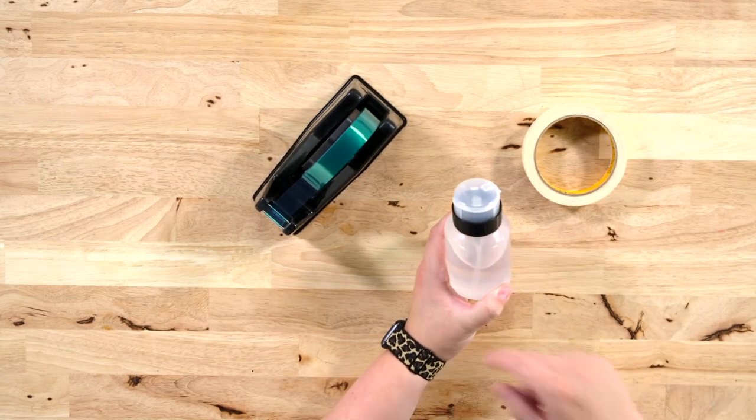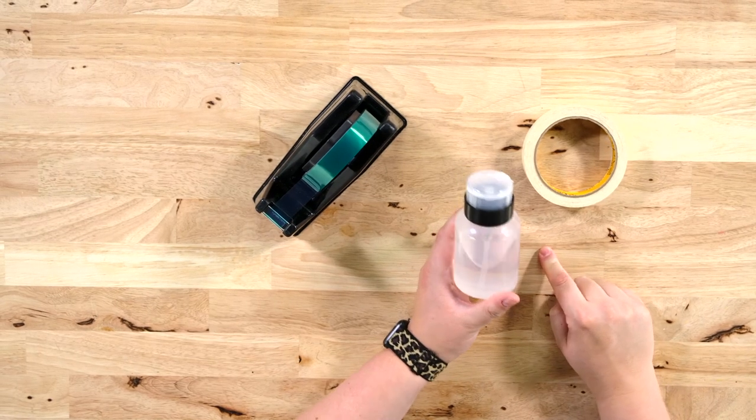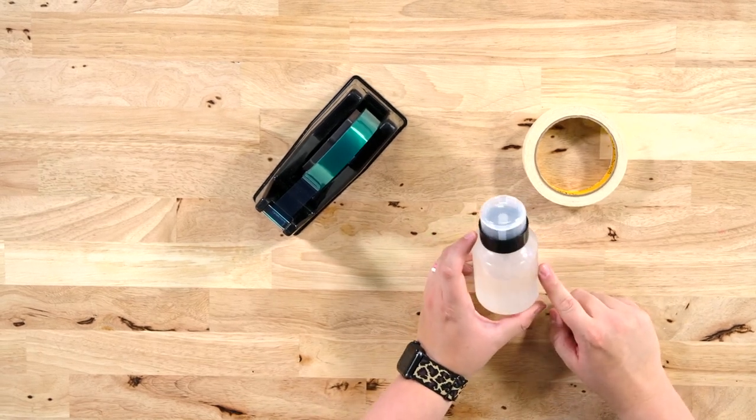This is rubbing alcohol in a pump bottle. We clean the table with this. We clean our hands with this. We clean resin projects with this, which if you guys didn't know, when you're working with UV resin before it's cured, you can clean off any resin that is spilled somewhere or resin on your project that you don't want there.